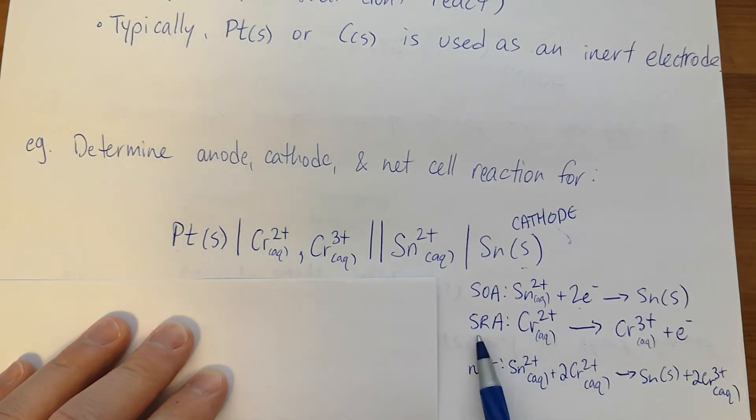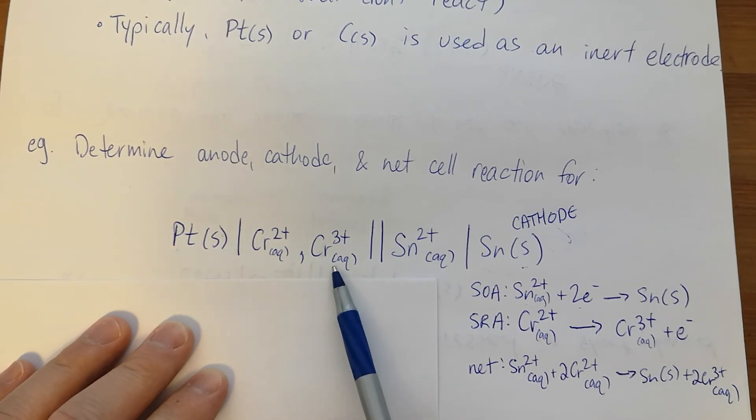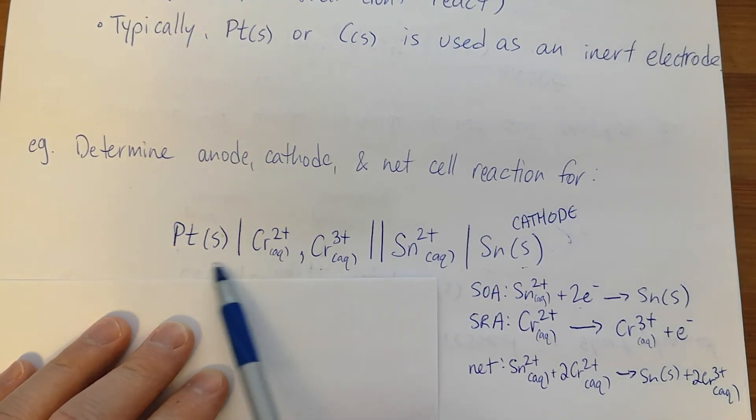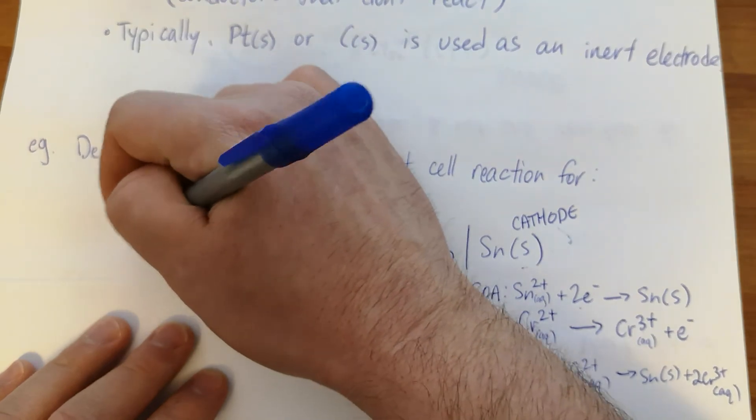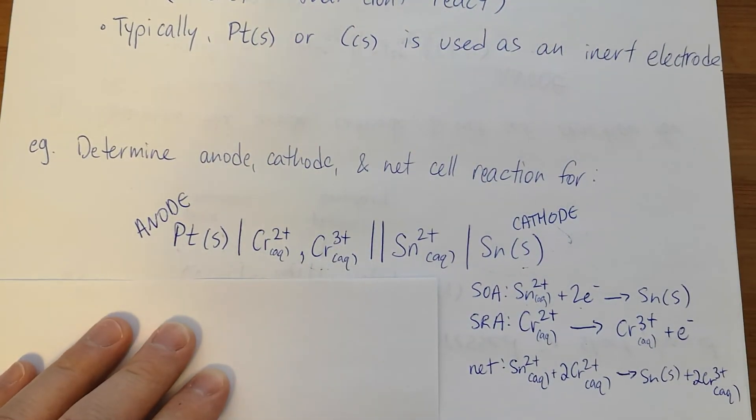The SRA was oxidized at the anode. The Chromium 2 is what was oxidized. It's oxidizing into Chromium 3, so this concentration will go up. But that makes the Platinum the anode. It's not part of the reaction, but it is necessary for this cell to operate.